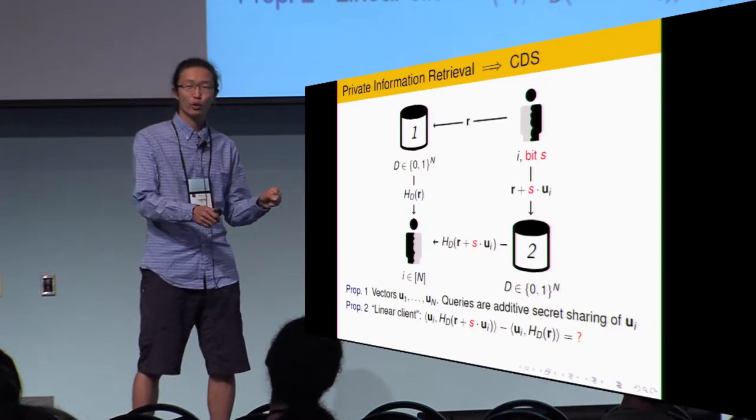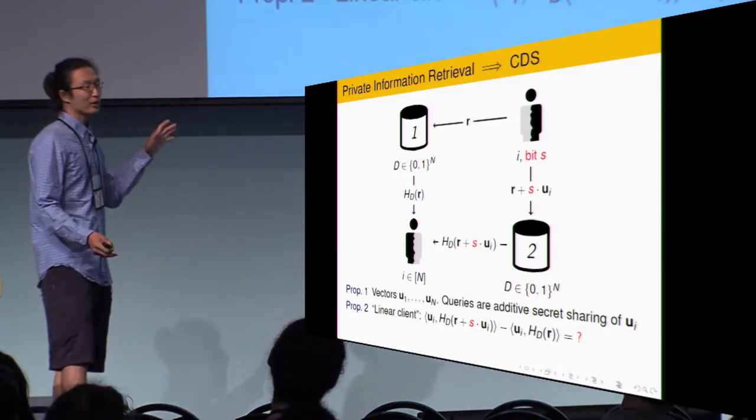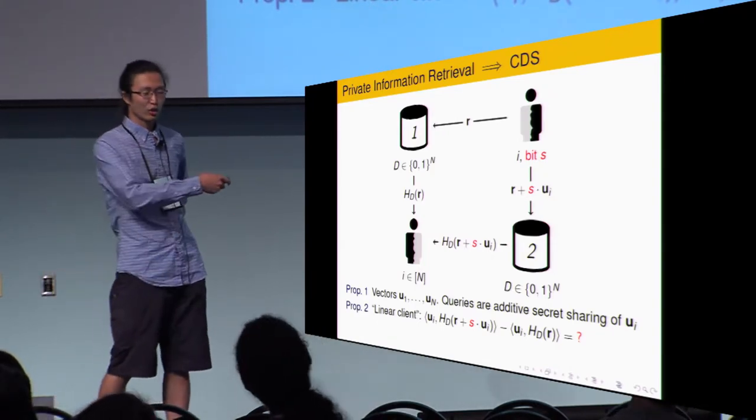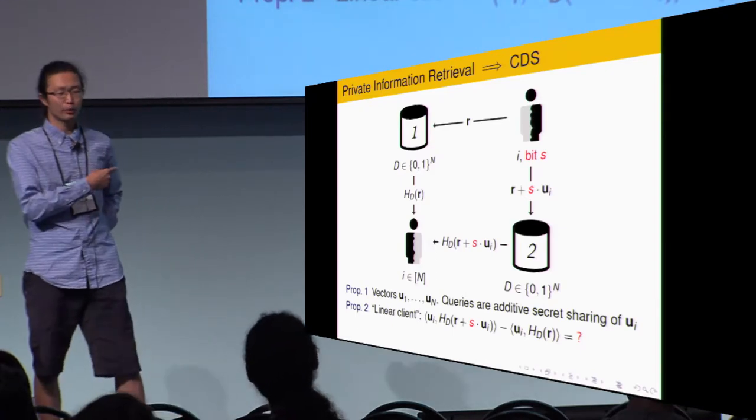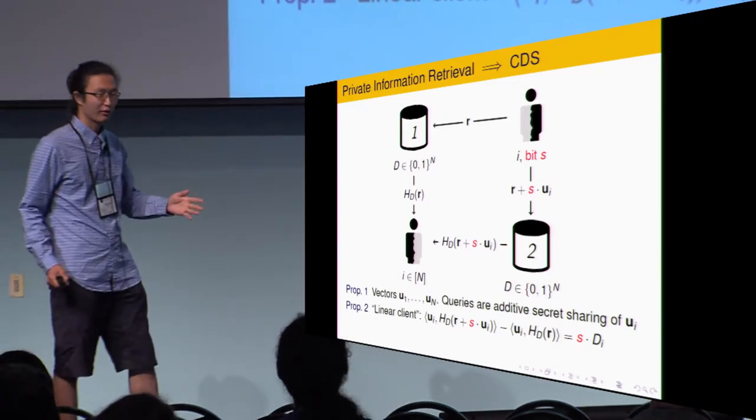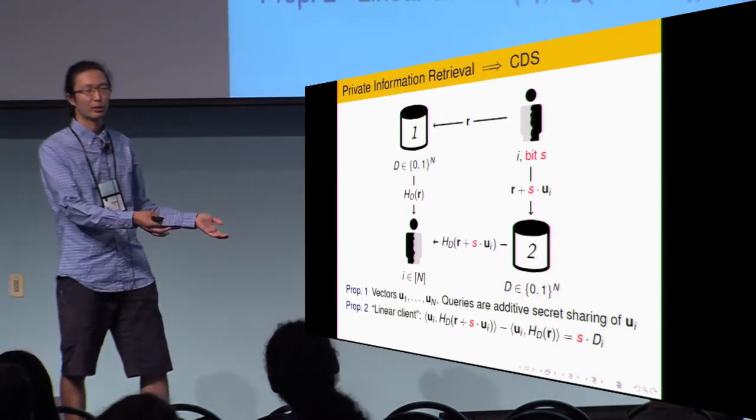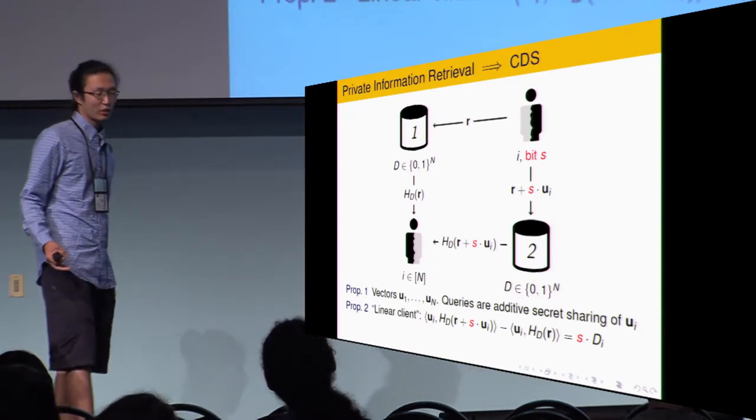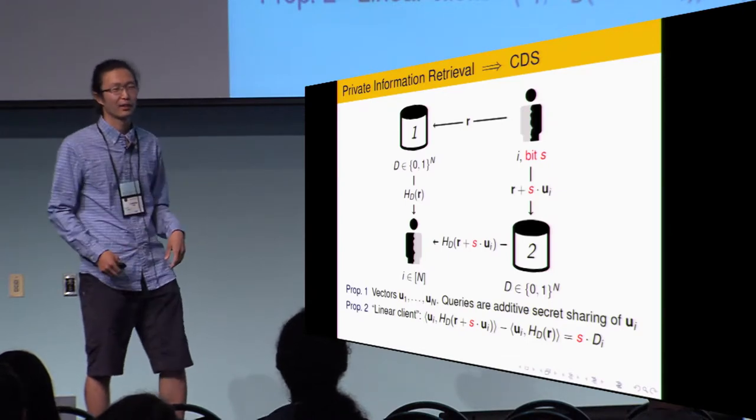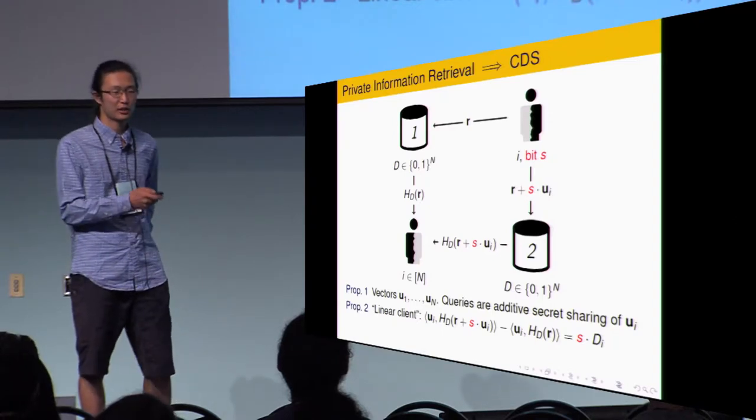So, the client would follow: if the bit is 1, nothing changes. If the bit is 0, he actually sends the same query to both server. Everyone else in this graph, they just pretend nothing has happened and do the same thing. So, what would the bottom client output here? It's actually output S times D_i. When the secret bit S equals 1, he just output D_i as previously. When the secret bit is 0, he's actually subtracting two identical inner products. Therefore, the output is 0. So, putting them together, the output is S times D_i.